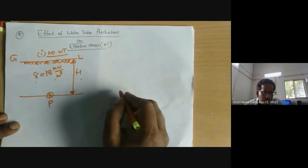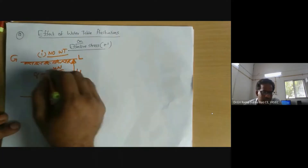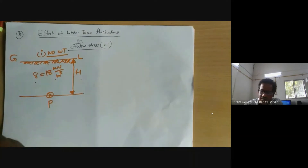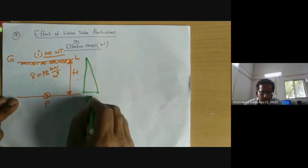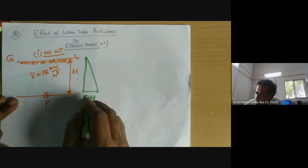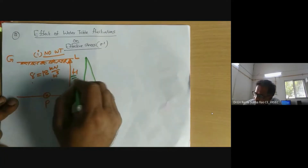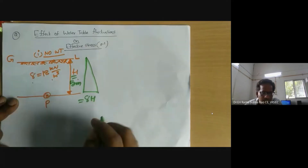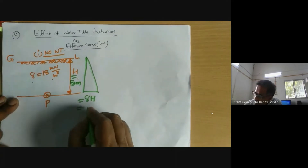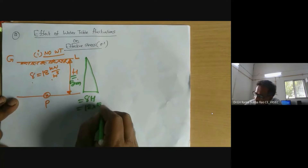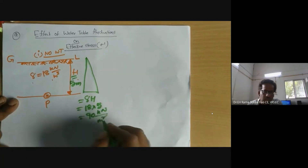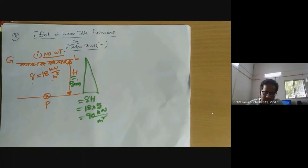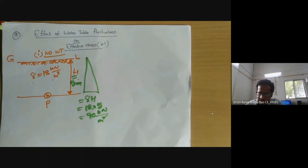No water table — so the soil is partially saturated. How do we determine effective stress in this case? Total stress sigma equals gamma times z. For our understanding, assume thickness h is 5 meters. So total stress = 18 × 5 = 90 kN/m². This is the total stress distribution diagram.